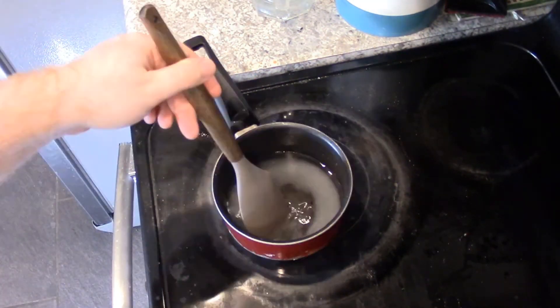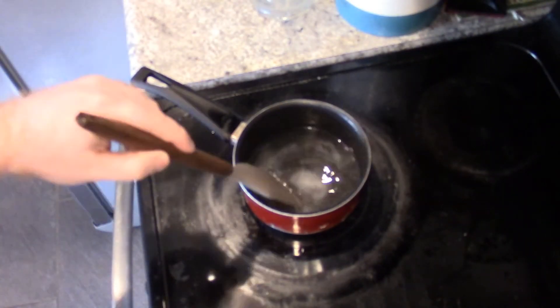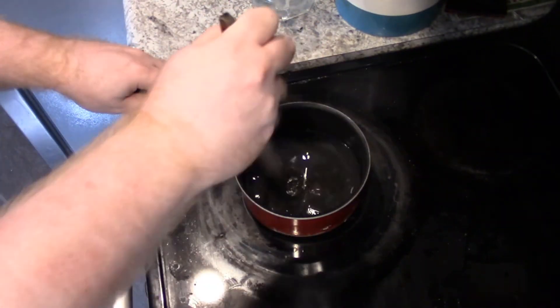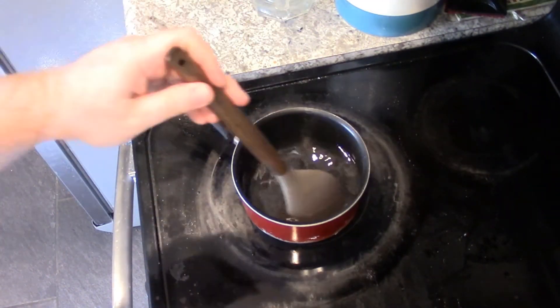Now just stir everything until it's all completely dissolved. Never add dye to hummingbird feed, especially red dye. It's toxic to the hummingbirds.